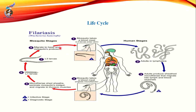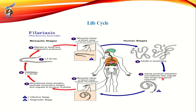The life cycle of Wuchereria bancrofti is as follows. A mosquito takes a blood meal which may contain larvae in the third stage. The mosquito's blood meal infects the lymphatic system of the human host. The larvae develop into adult worms in the lymphatic system. The adults produce many microfilariae.